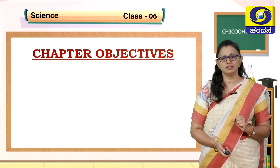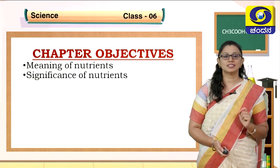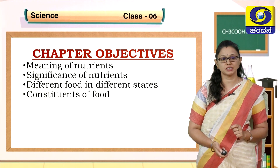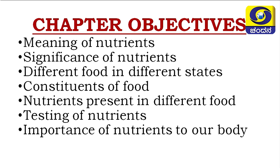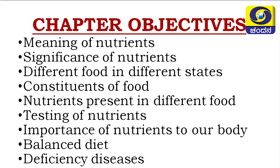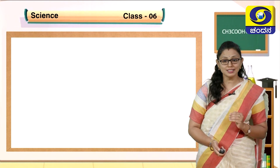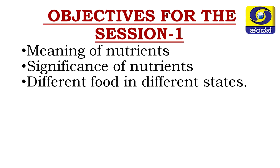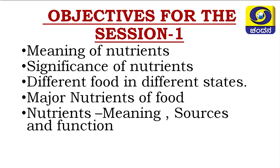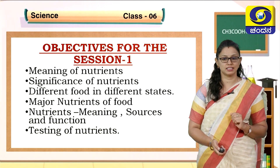What are the learning points you will be learning in this chapter — Components of Food? You will be learning about the meaning of nutrients, significance of nutrients, different foods in different states, concepts of food, the nutrients present in different foods, testing of nutrients, importance of nutrients to our body, balanced diet, and deficiency diseases. For this session, we will discuss the meaning and significance of nutrients, different food in different states, major nutrients of food, their meaning, sources and function, and testing of nutrients.